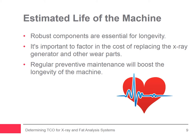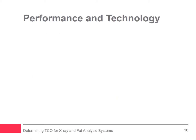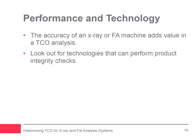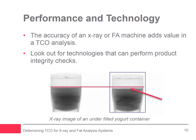The fifth variable is performance and technology. The accuracy of an X-ray or FA machine also adds value in a TCO analysis. Technology is where the value of an investment can pay off, so it's important to determine how robust the technology is. Look out for technologies that are capable of more than just contamination detection and offer additional product integrity checks, such as spotting missing components or issues with mass and/or weight.